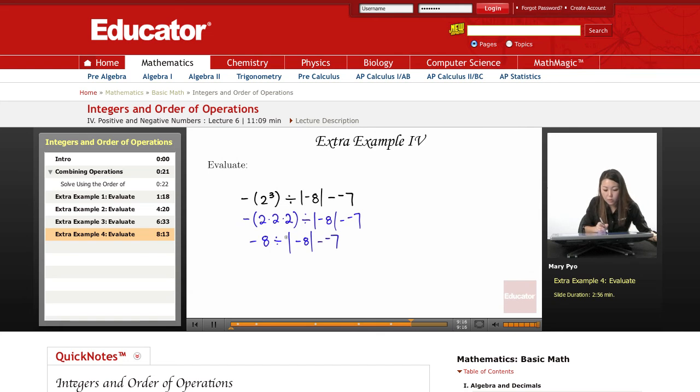So I want to solve this out too because absolute value, it's kind of like parentheses, so just solve that out first before you divide and do anything else. So absolute value of negative 8 is 8 because the distance from 0 is 8.